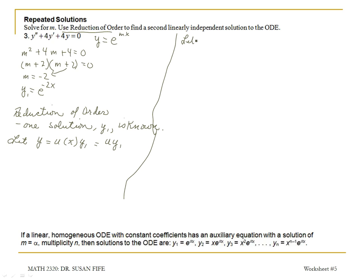We're going to let y equal u, a function of x, times e to the negative 2x, and substitute into the original differential equation. When I substitute in, I need y prime, and here I need to use a product rule. I get u prime times e to the negative 2x, and then the derivative of e to the negative 2x carries down a negative 2, giving me negative 2u times e to the negative 2x.